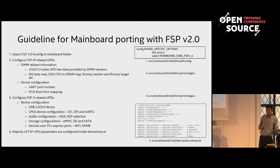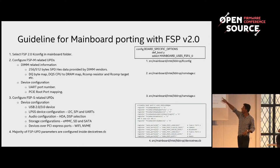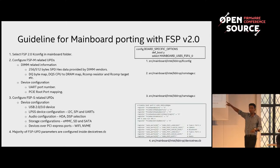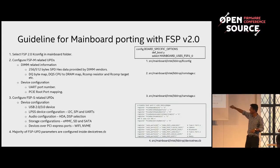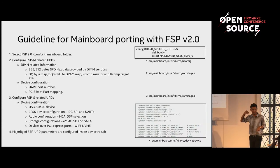Here is a sample of our devicetree.cb. This is where you tell coreboot which root port numbers to enable, your clock source programming, and which USB ports to enable or disable with their respective configurations.